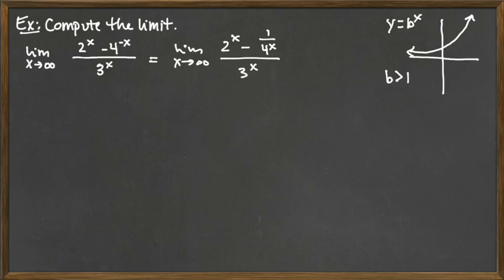And so what we're saying is as x goes off to infinity, we're looking here at the right end arrow, and we see that each one of those is going to go off to infinity, but be careful because we've got one of them that happens to be in the bottom. So 2^x is going to go off to infinity. The 4^x will go off to infinity, but remember that would be in the bottom there. And then the 3^x in the denominator would also go off to infinity.